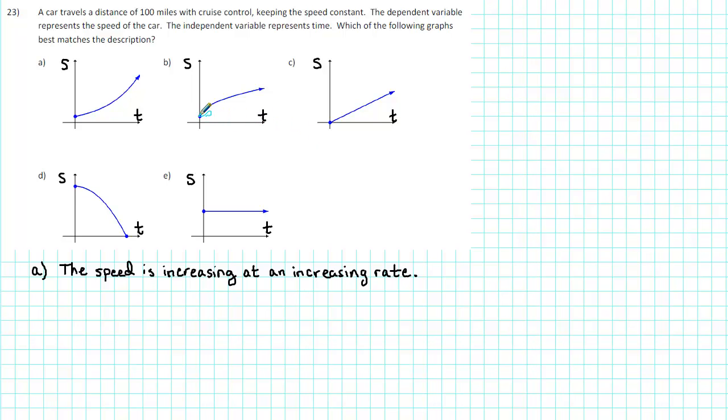For B, the speed graph rises from left to right, but it's curving in a downward direction. Therefore, we say that the speed is increasing, but at a decreasing rate.